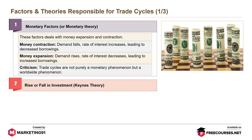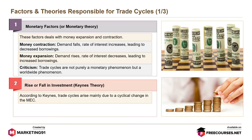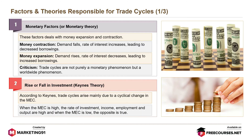Next is the rise or fall in investment, or the Keynes theory. According to Keynes, trade cycles arise mainly due to a cyclical change in the MEC. When the MEC is high, the rate of investment, income, employment, and output are high. When the MEC is low, the opposite is true.